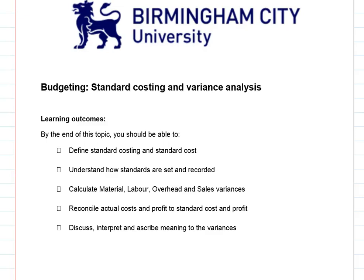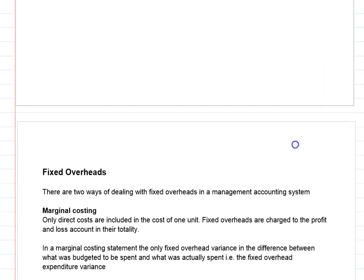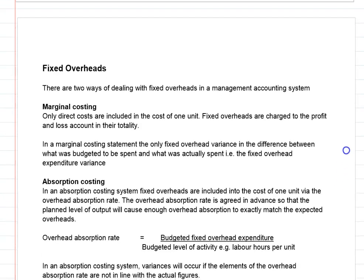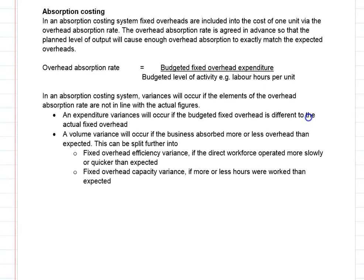Welcome back. This video is about standard costing, and in particular we're looking at fixed overheads. We need to bear in mind that there are two ways of treating fixed overheads. With a marginal costing approach, fixed overheads are treated as period costs and charged in full to the profit and loss account in the period in which they occur. For a standard costing system using a marginal costing approach, there is only going to be one variance: the expenditure variance.